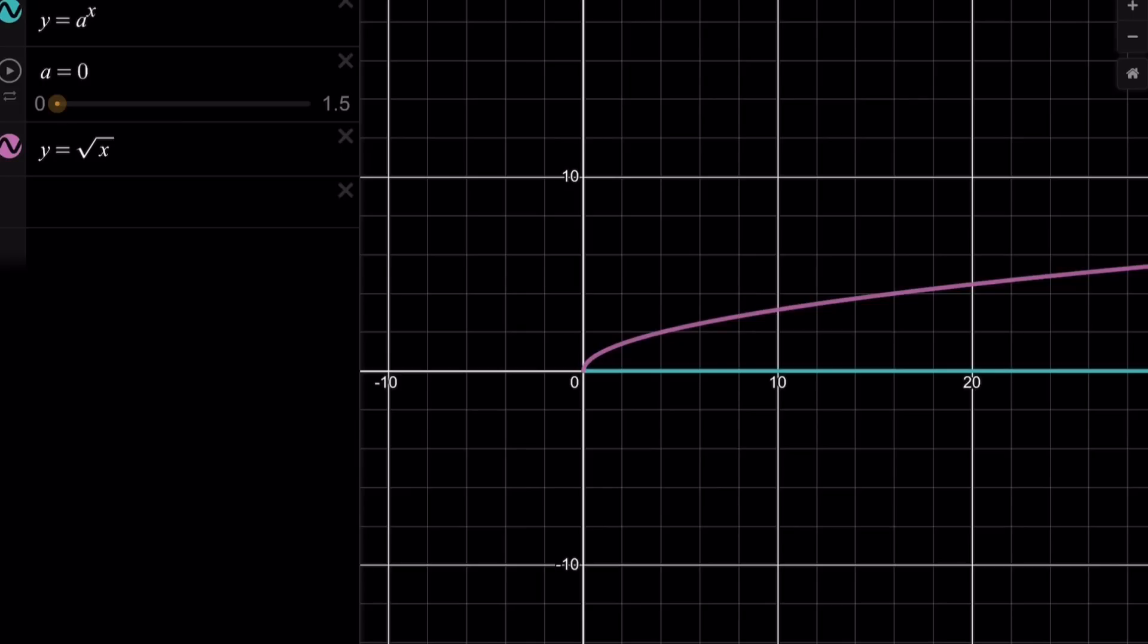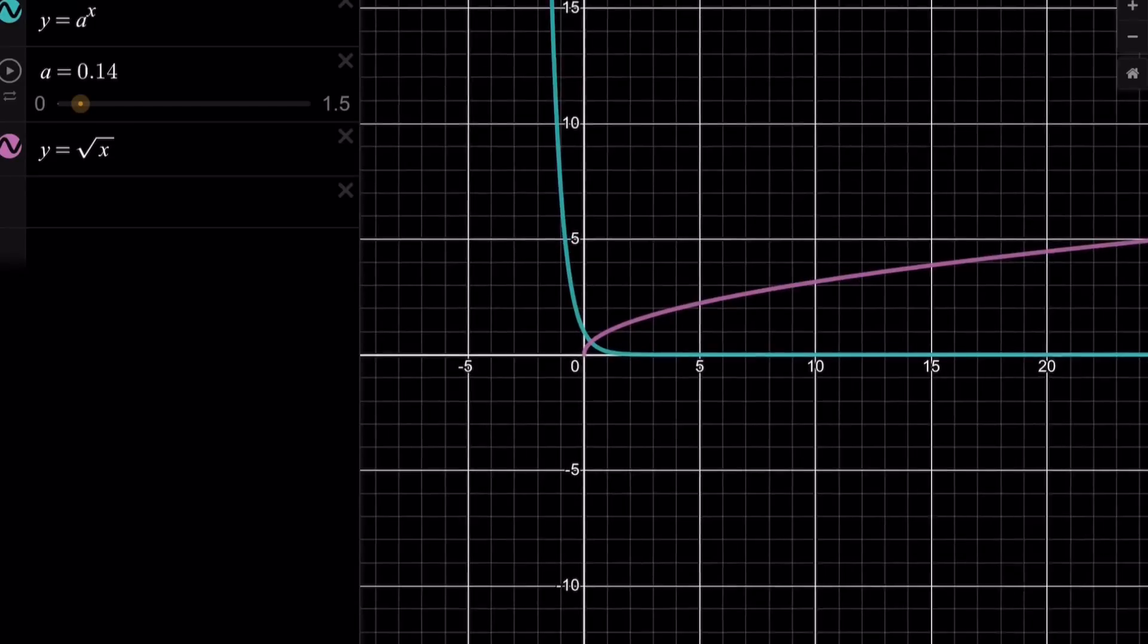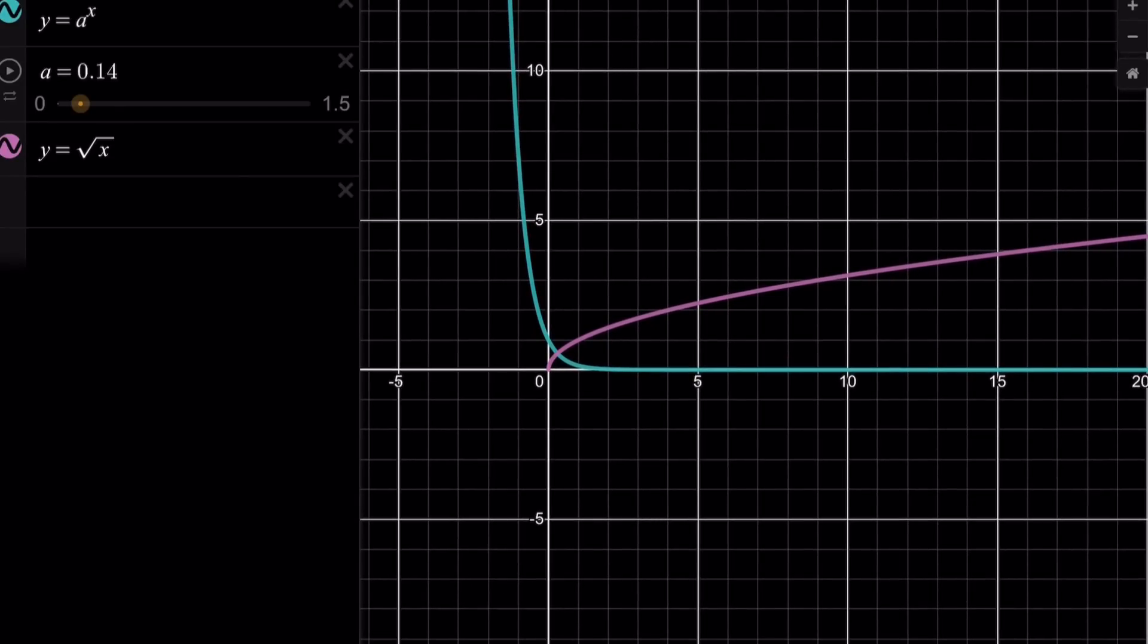But what happens if you change the value of a a little bit? Obviously, a to the power of x is an exponential function. And if a is less than 1, you're going to have a decreasing function like this one. You can also zoom in if you want. Or you're going to have a values that are larger than 1. Let's go ahead and increase the a values. Notice that as a increases towards 1, our graph is going to turn into an increasing graph.